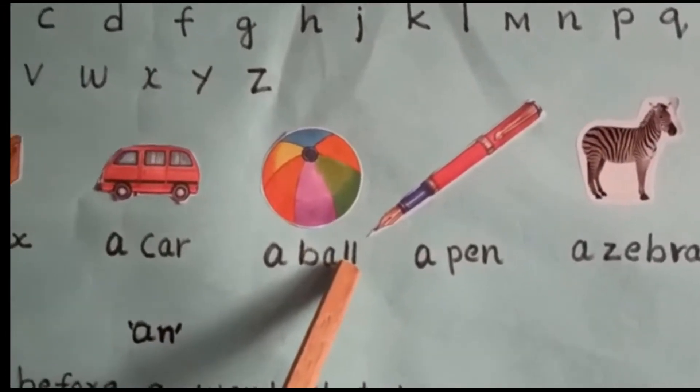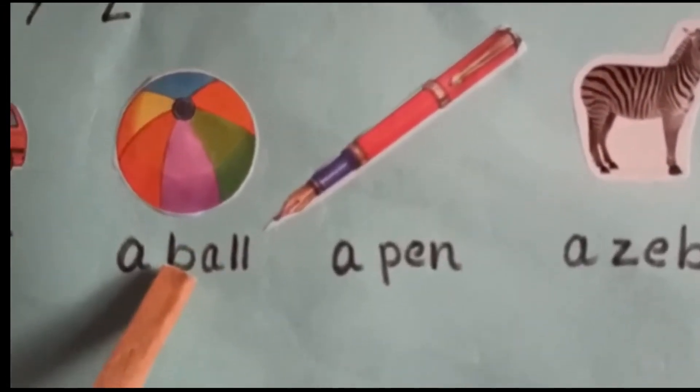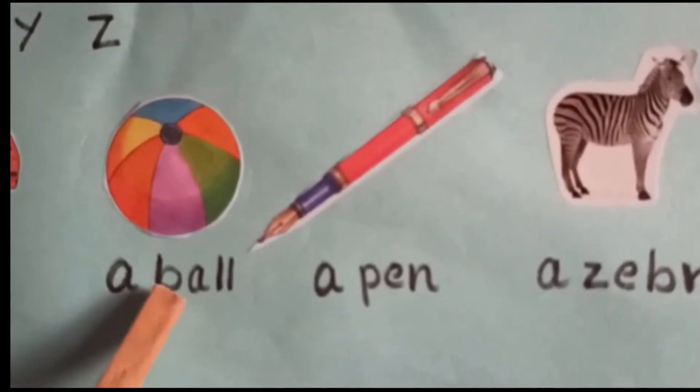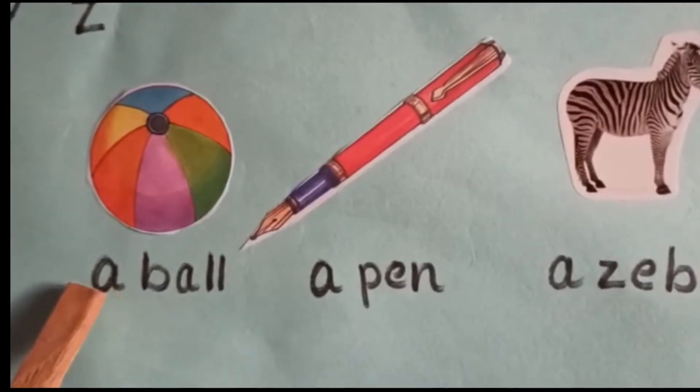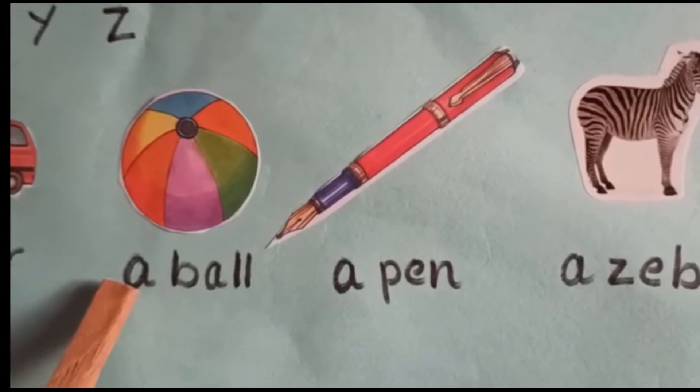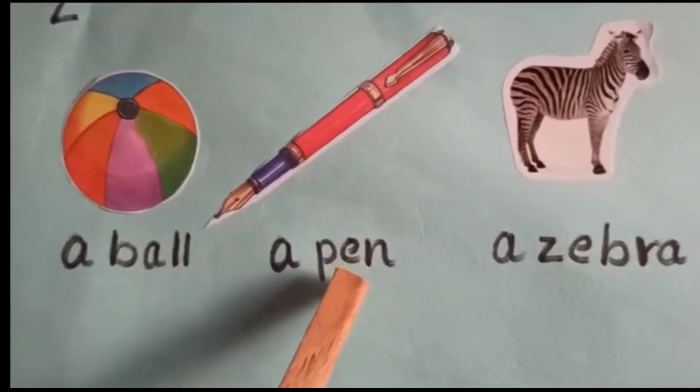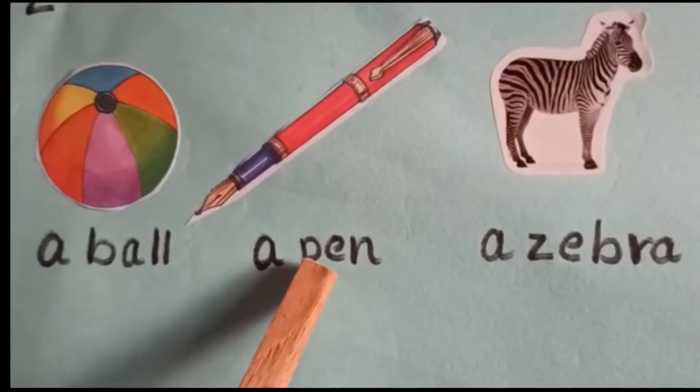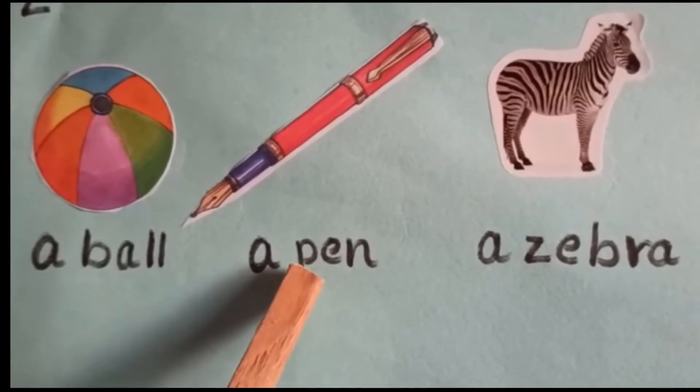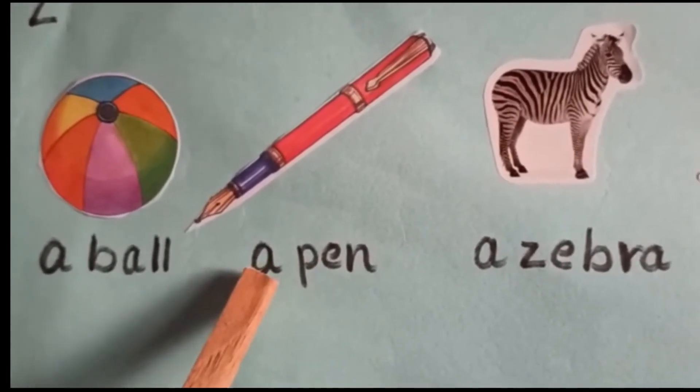A ball. B is a consonant. First letter B is a consonant. That's why you have to write a before consonant words. A pen. P is a consonant first letter. That's why you have to write a pen.